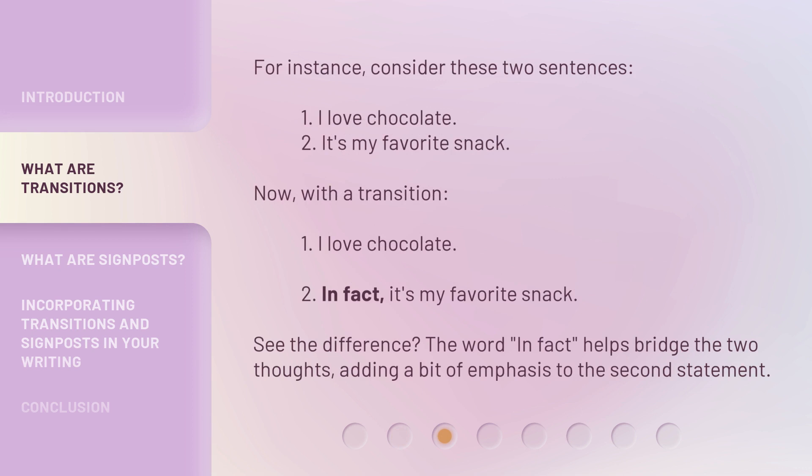For instance, consider these two sentences. 1. I love chocolate. 2. It's my favorite snack. Now, with a transition: 1. I love chocolate. 2. In fact, it's my favorite snack. See the difference? The word 'in fact' helps bridge the two thoughts, adding a bit of emphasis to the second statement.